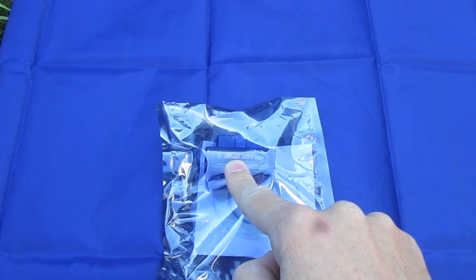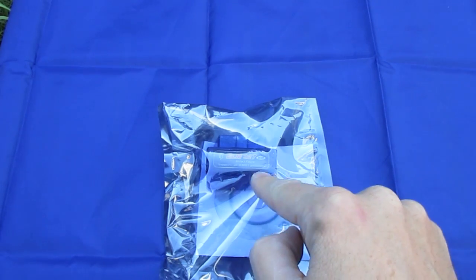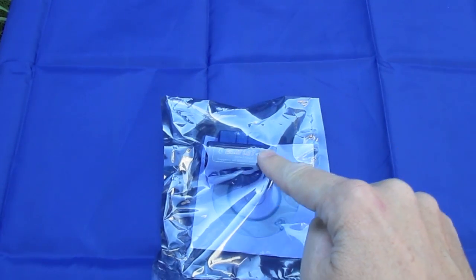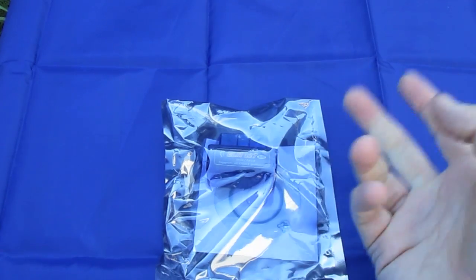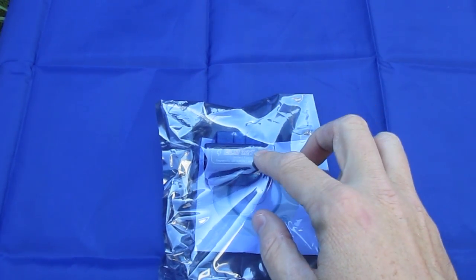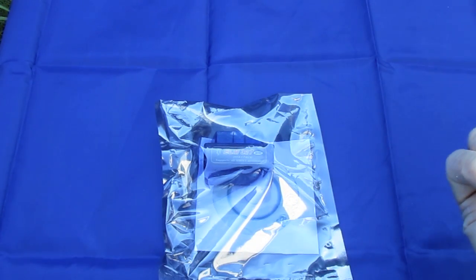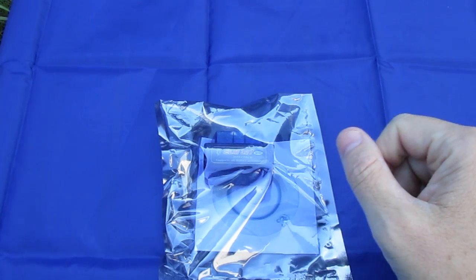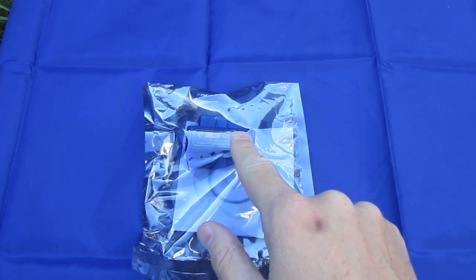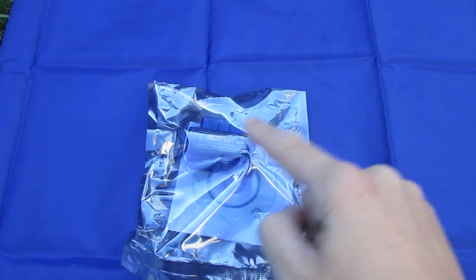What this is, is a USB to OBD2 adapter. So this OBD2 port is underneath the dash of your vehicle and that's where the mechanics plug in all their testers and they can tell you what's going on with the vehicle. They can read all the codes out of it and I saw this on the banggood.com site for I think it was three dollars or four dollars.